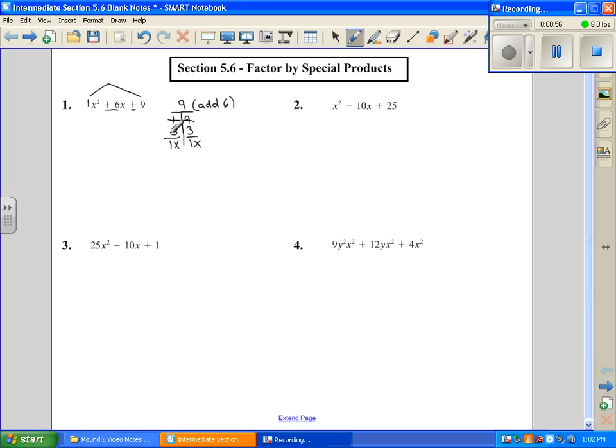So I'll put it over 1x and 1x. Simplify if you can. The 3 over 1 doesn't simplify, and then over here 3 over 1 doesn't. So I'll write from bottoms up, 1x plus 3. And then I'll also do it here, 1x plus 3. When our parentheses are exactly the same, I can rewrite it as x plus 3 squared.